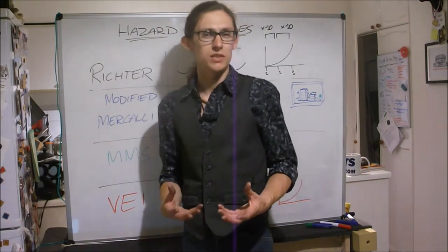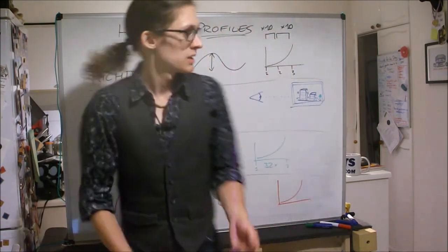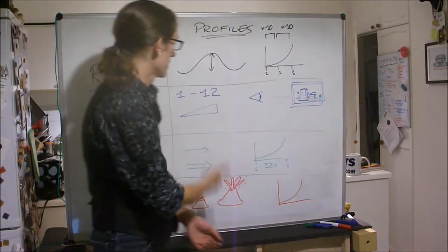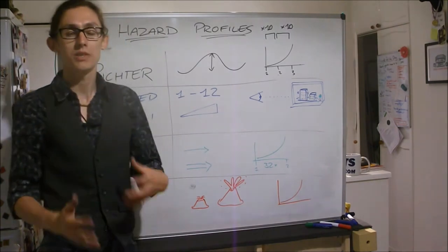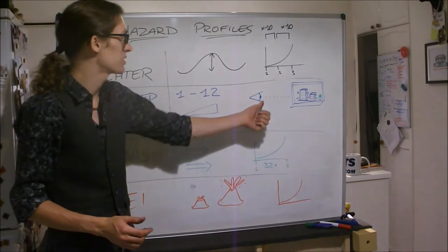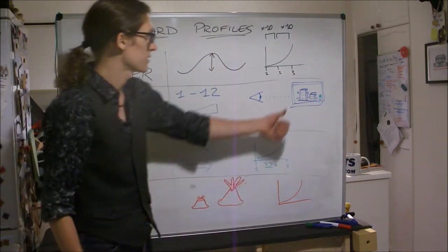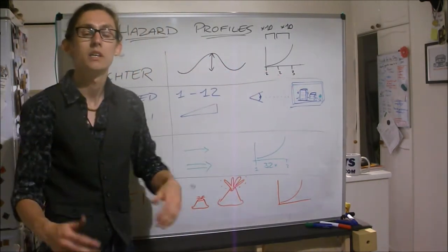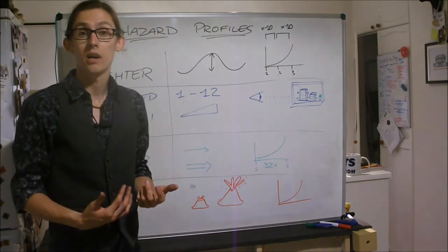The modified Mercalli scale, rather than being a mathematical scale like measuring the height of waves, is more of a relative scale. It's more like the Beaufort scale. It is one to twelve and it's based on how much shaking, how much movement you perceive. So it's about what you see. So if you look out the window you can see all the shaking, it'll get a higher Mercalli rating.